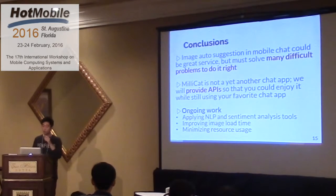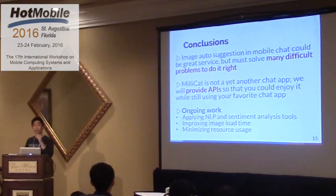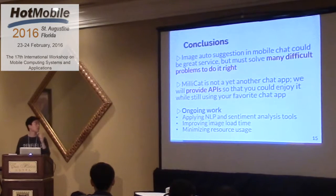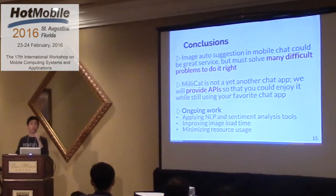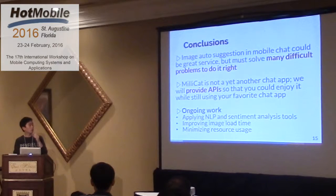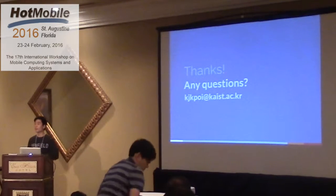In conclusion, we think image auto-suggestion in mobile chat is a really great idea for better communication, but there are many difficulties to resolve — timeliness, appropriateness, latency, and resource efficiency. We are not making a chatting app; we're offering our service as an API and library for sharing companies. Our ongoing work is applying NLP techniques from the NLP research area to solve the appropriateness and timeliness problems, and we are still working on improving image loading time and minimizing resource usage. Thank you for listening, and feel free to ask any questions. Thank you.